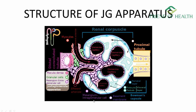Here is the structure of the cross-sectional area of the nephron. This is the proximal convoluted tubule; we have a renal corpuscle, the afferent arteriole, and the efferent arteriole. See here carefully — this part is called the juxtaglomerular apparatus.